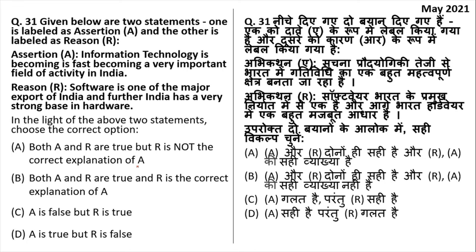Assertion: IT is fast becoming a very important field of activity in India — true. There are thousands of IT companies like TCS, Infosys, and Wipro. Reason: software is one of the major exports of India and India has a strong base in hardware — the reason is incorrect. India is better at providing services to other companies; there are fewer product-based companies than service-based ones. India does not have a very strong base in hardware. So assertion is true but reason is false — the right answer is D.